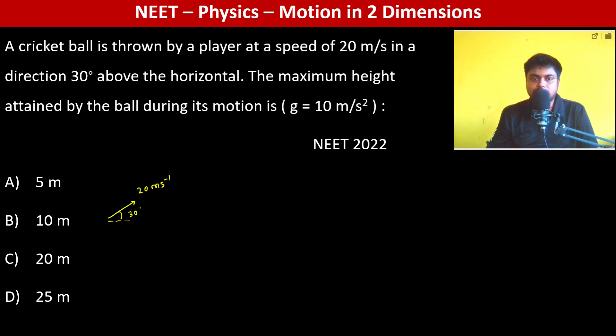The maximum height attained by the ball during its motion is going to be u square sine square theta divided by 2g, which is 20 into 20, sine 30 is 1 by 2 into 1 by 2.